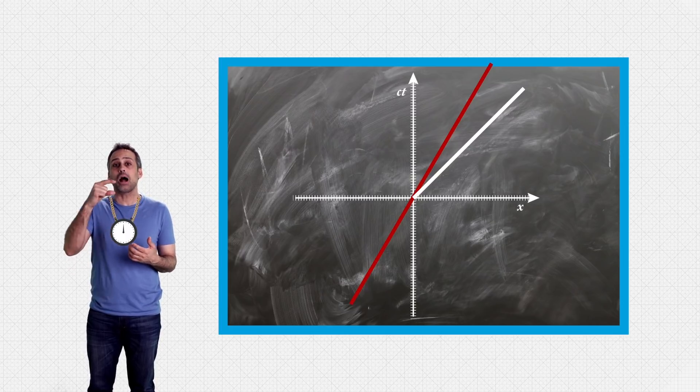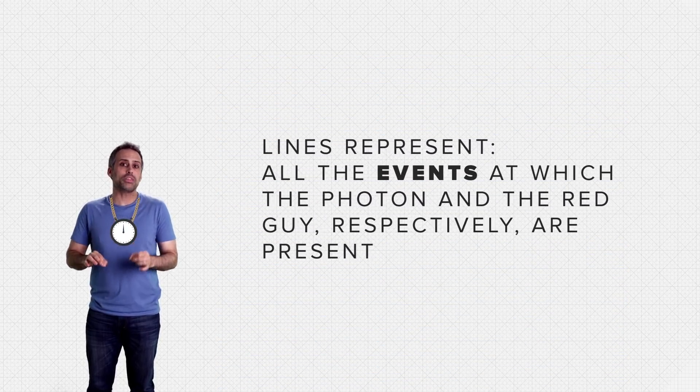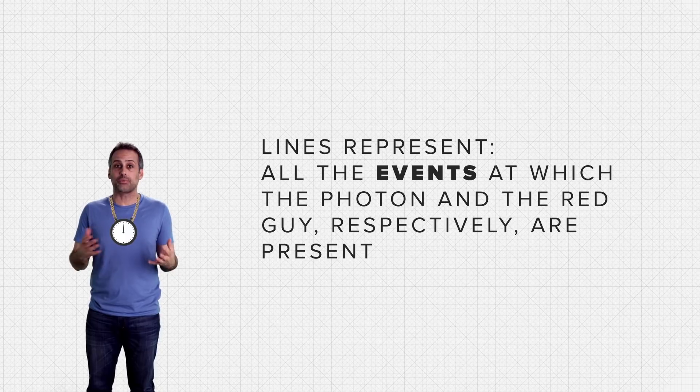In the same amount of time on my clock, he passes fewer marks on my x-axis. Those lines that we just drew link all the events at which the photon and the red guy respectively are present.